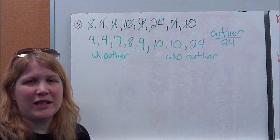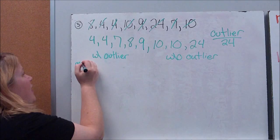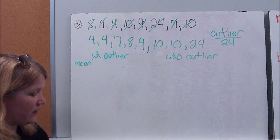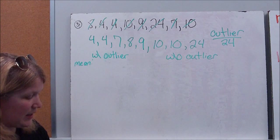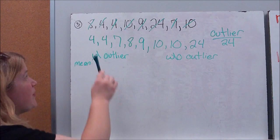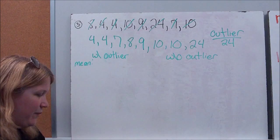So first, let's calculate our mean. So again, we're going to add up all the numbers that we've got. 4 plus 4 plus 7 plus 8 plus 9 plus 10 plus 10 plus 24 gives me 76. Then I'm going to divide by how many numbers did I have? 1, 2, 3, 4, 5, 6, 7, 8. I'm going to divide that by 8. And I find that my mean is 9.5. A little high.